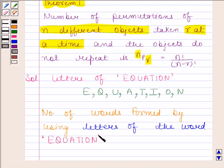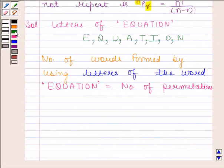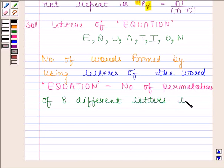is the number of permutations taken all at a time.